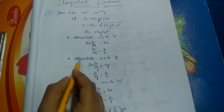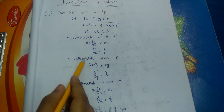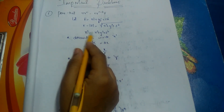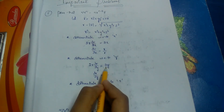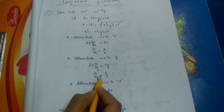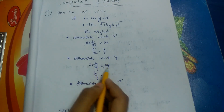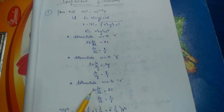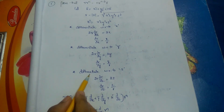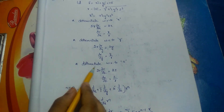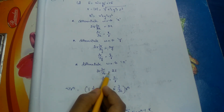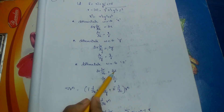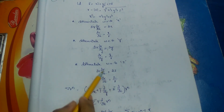Similarly, differentiating with respect to y: 2r·(∂r/∂y) = 2y, so ∂r/∂y = y/r. Differentiating with respect to z: 2r·(∂r/∂z) = 2z, and cancelling 2 gives ∂r/∂z = z/r.